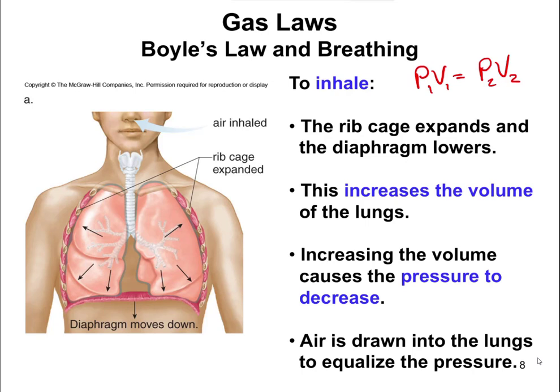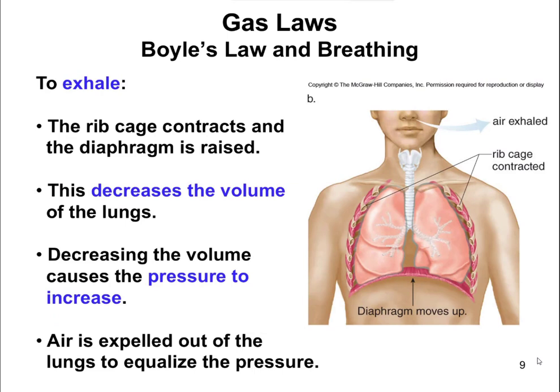Your body doesn't like to have that decreased pressure in your lungs, so air is drawn in to equalize the pressure. Whenever you exhale, the exact opposite happens — your rib cage contracts and your diaphragm moves up, decreasing the volume of your lungs. The pressure increases, and air gets breathed out to equalize the pressure. So pressure and volume are inversely proportional — that's Boyle's Law.